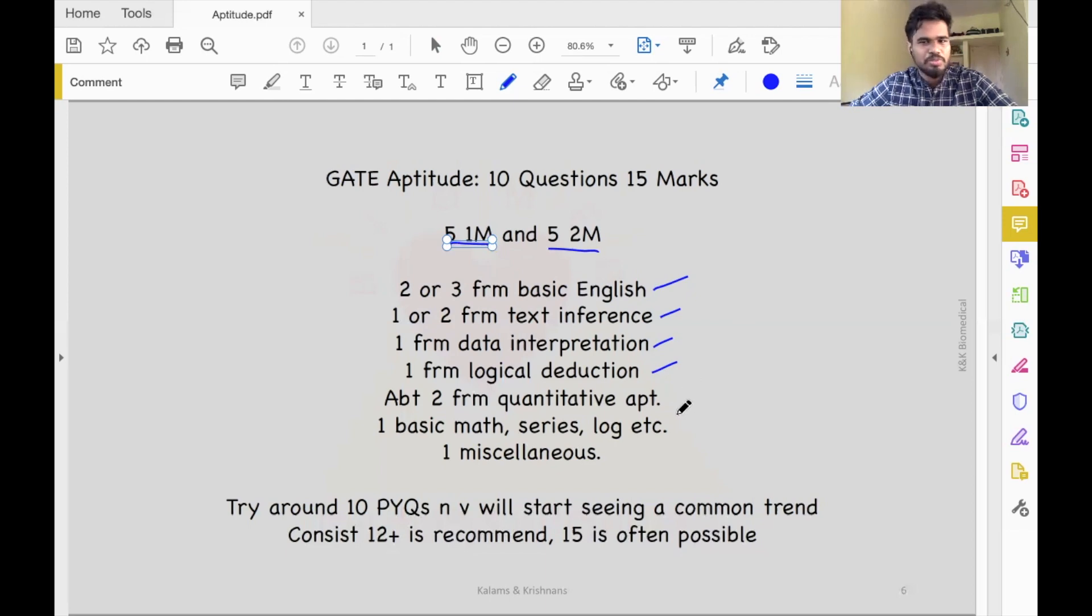Then there are usually two quantitative questions related to speed, distance, time, time and work, percentages, profit and loss, etc.